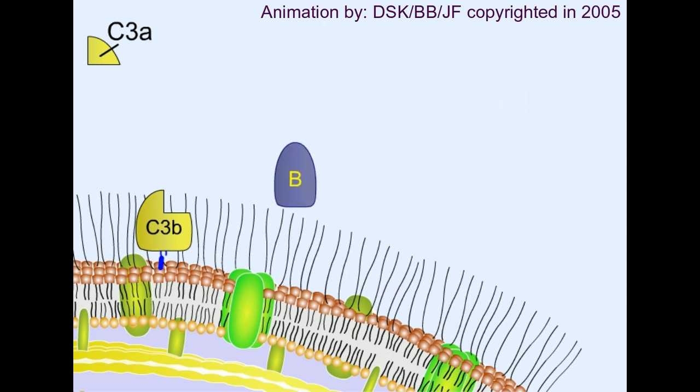Then another protein called factor B comes in, which is cleaved by the enzymatic activity of factor D, and it's cleaved into Bb and Ba. Ba is the small subunit which diffuses away, while Bb remains attached to the C3b on the surface.